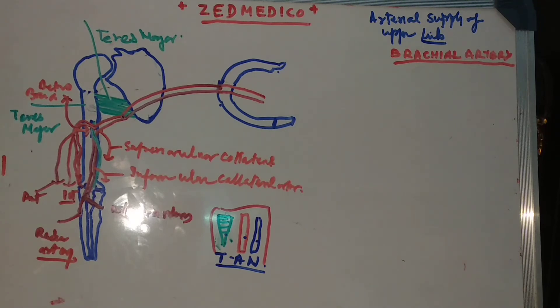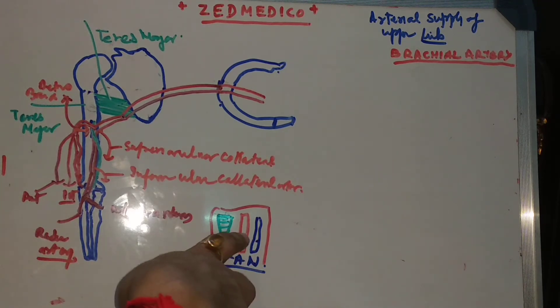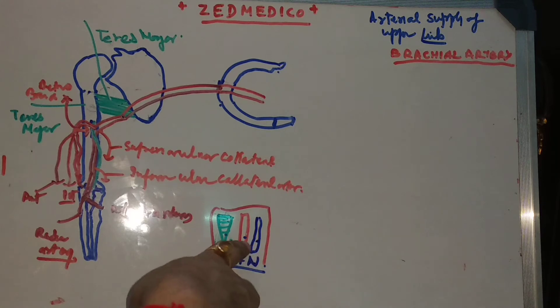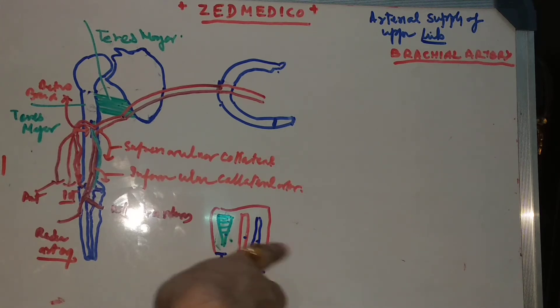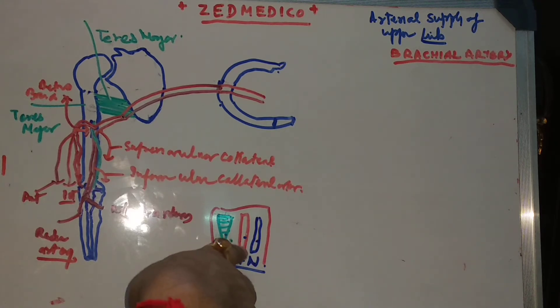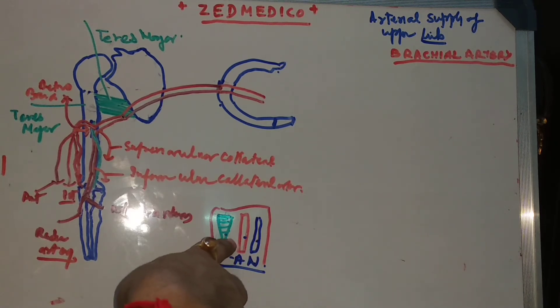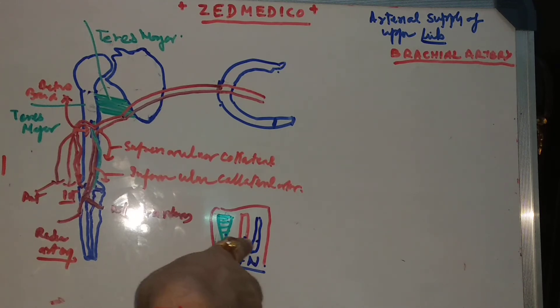Another important point: the brachial artery can be accessed for arterial blood gas analysis, and we also measure blood pressure from the brachial artery.